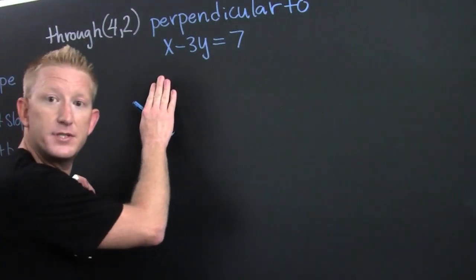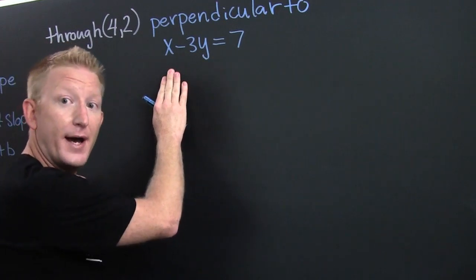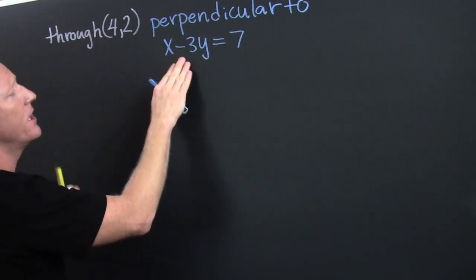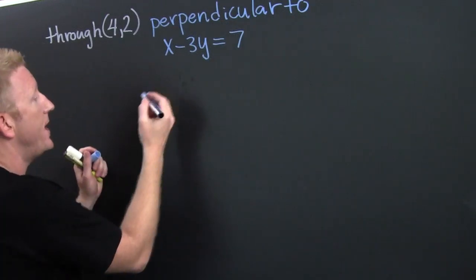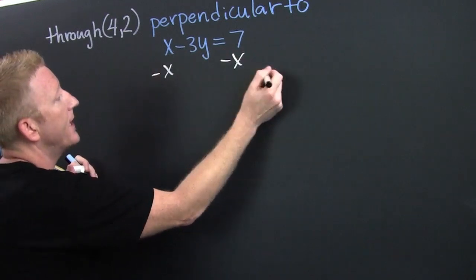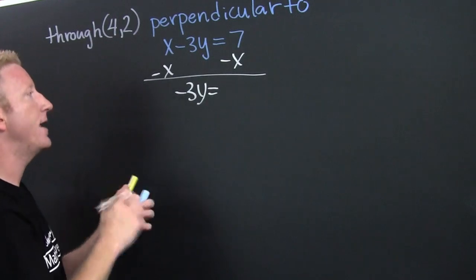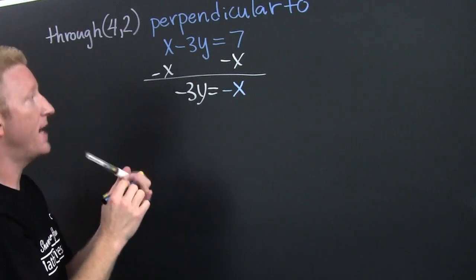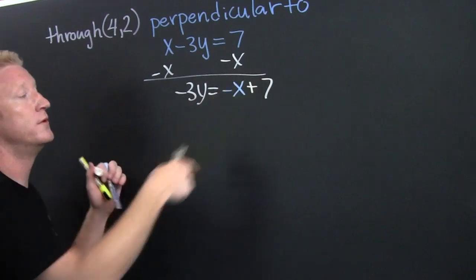To find the proper slope, we're going to take this equation and find the slope of that line — you've had a video about that. We're going to put it in y equals mx plus b form. So what I want to do is subtract that x from both sides, and then I have negative three y on the left, and since they're not like terms you're going to leave it alone — that's going to be negative x plus seven.